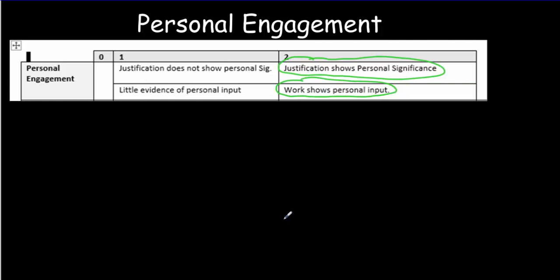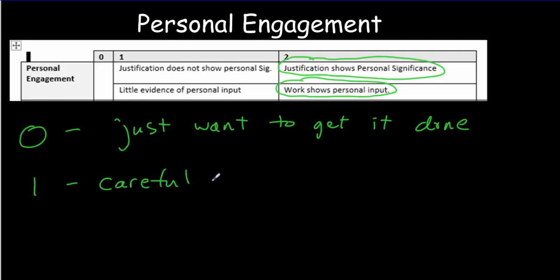Overall you're going to get a zero, one, or two. Zero would correspond to somebody who just wants to get the project done. They're careless in their work but they've handed something in. It follows very standard lab format, so they're not really doing anything creative here.